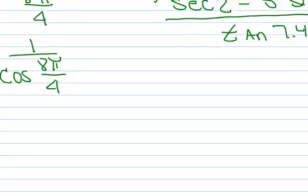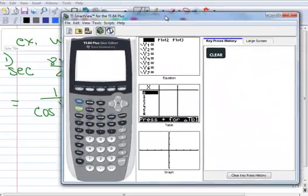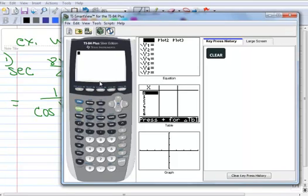So let's pull up our calculator and type this in. Okay, remember to check and make sure that you are in radian mode. So we're going to type in 1 divided by cosine, and I automatically get a parenthesis there.